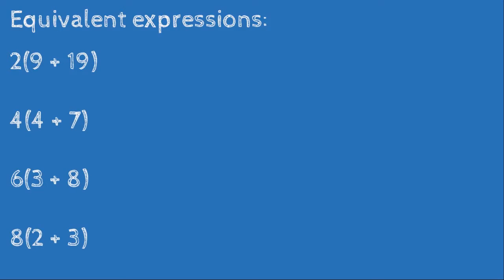Next, equivalent expressions. We have: 2(9 + 19), 4(4 + 7), 6(3 + 8), and 8(2 + 3). A number directly in front of parentheses means multiplication, so we apply the distributive property: 2 times 9 plus 2 times 19 for the first expression.